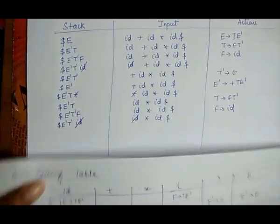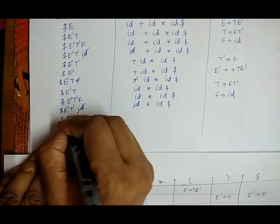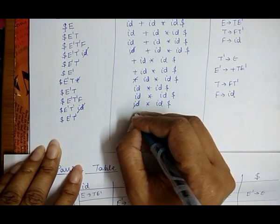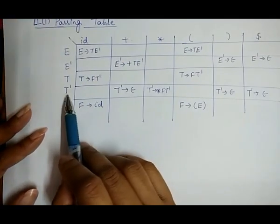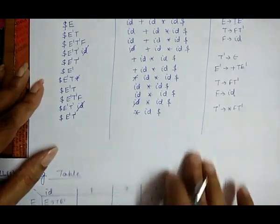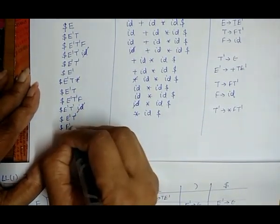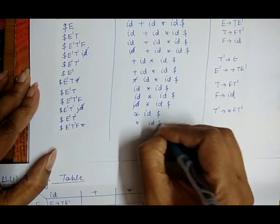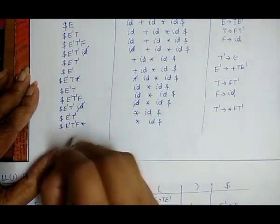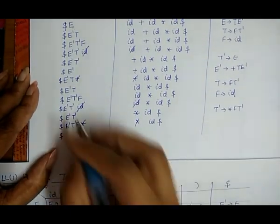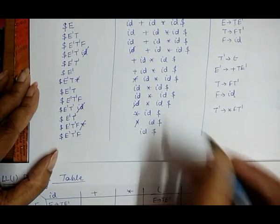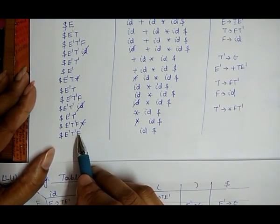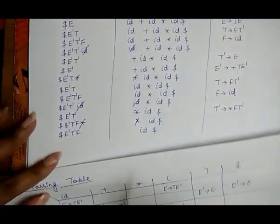The stack now contains: dollar, E', T' and the input is: star id dollar. The top of the stack is T' and the input is star (into). From the table, T' on seeing star: the action is T' → *FT'. We substitute T' as T', F, star. Stack becomes: dollar, E', T', F, star (top). Star matches star in the input — we pop star. No action.